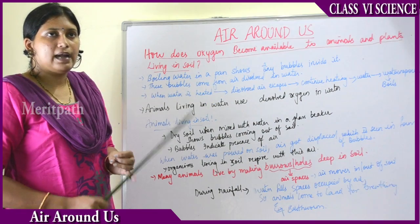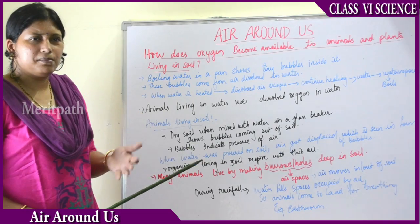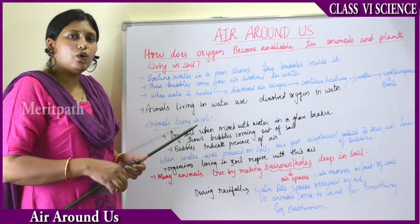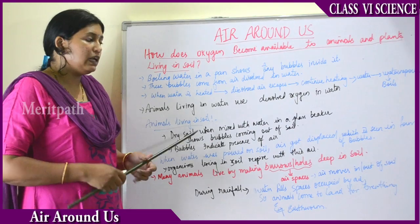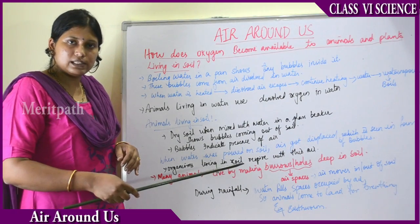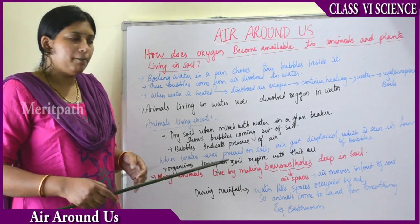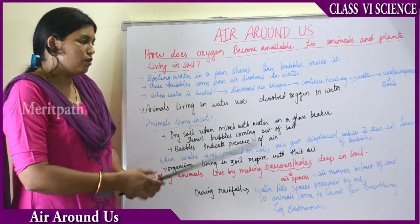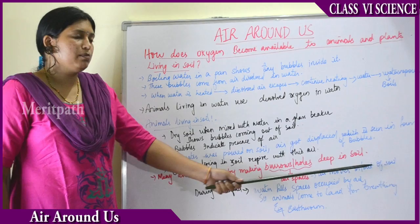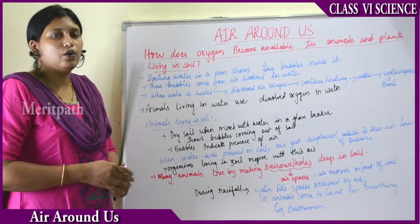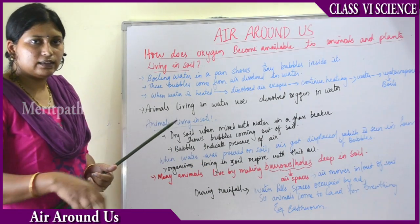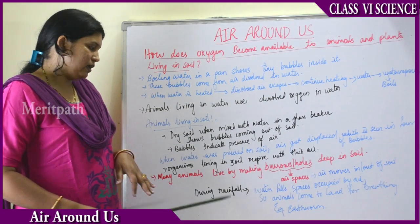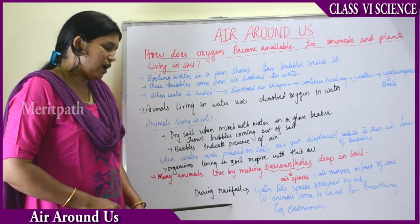Animals like ants, snakes, and rats live by digging holes deep into the soil. These burrows or holes have air spaces in them which help in moving air in and out of the soil, allowing those animals and plants to breathe.